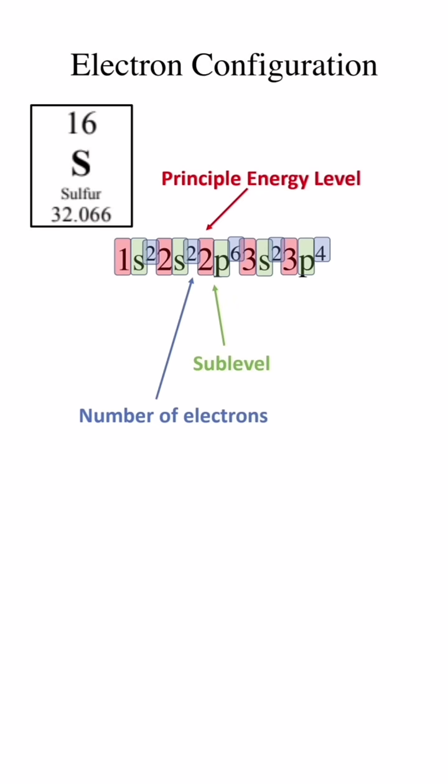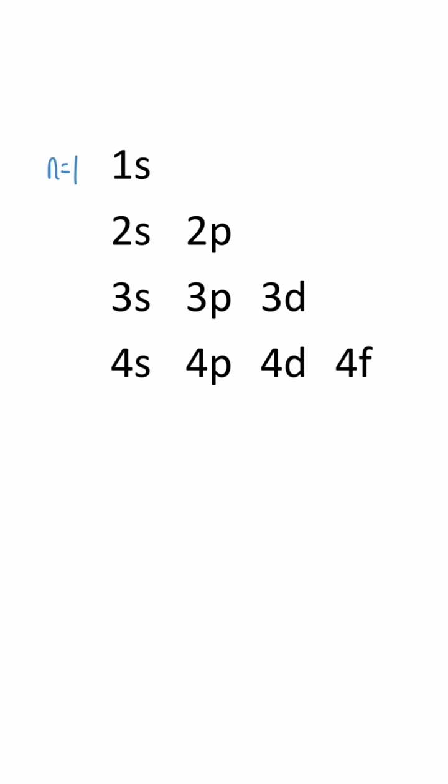Each energy level includes a different set of sublevels. The first principal energy level only has an S sublevel, the second has an S and a P, the third has an S, P, D, and the fourth has an S, P, D, and F.